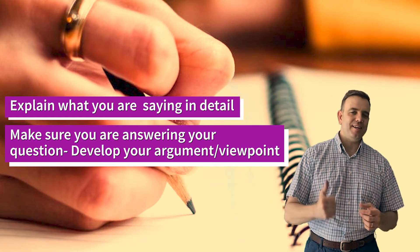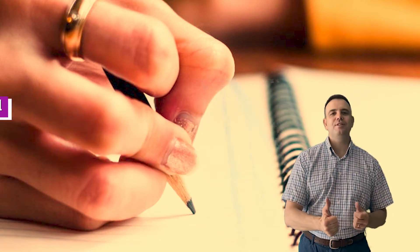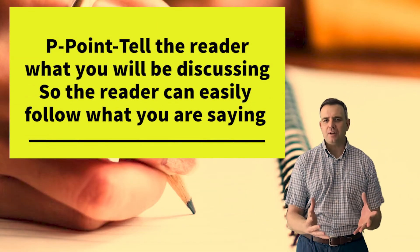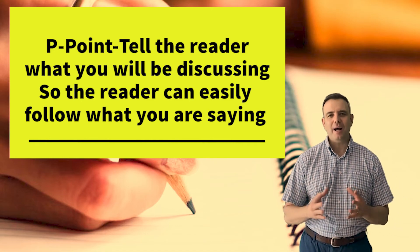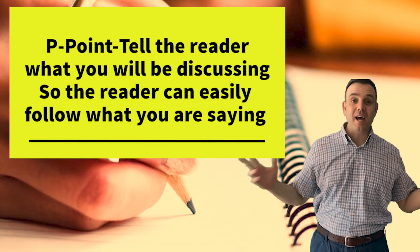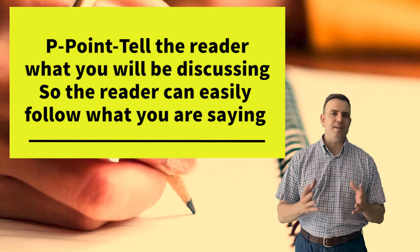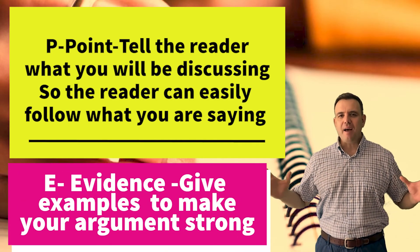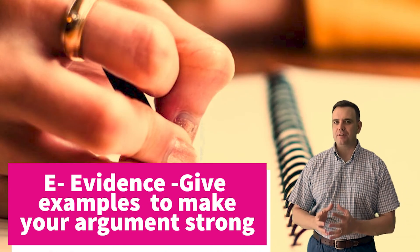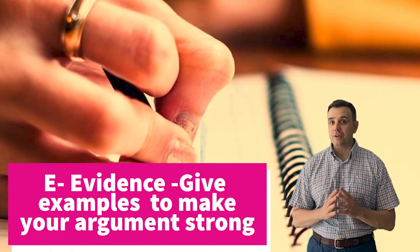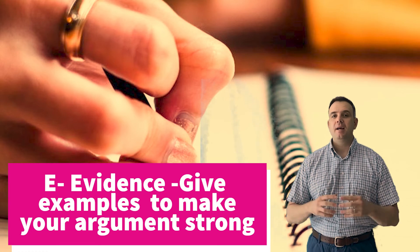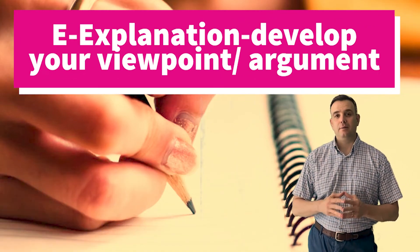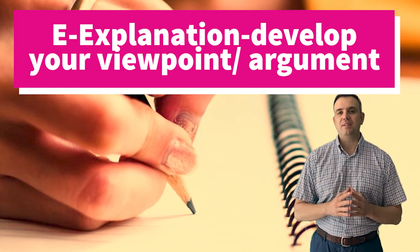So P-E-E. Let's review. So P obviously stands for points. Tell the reader what you're going to be discussing or arguing in your paragraph, so they have an idea of exactly what to expect. It makes it easy for them to follow what you are saying. E for evidence. Back up whatever you are saying with evidence. Make it as strong as possible. And then explanation and develop your point. That's what we mean by the second E there.